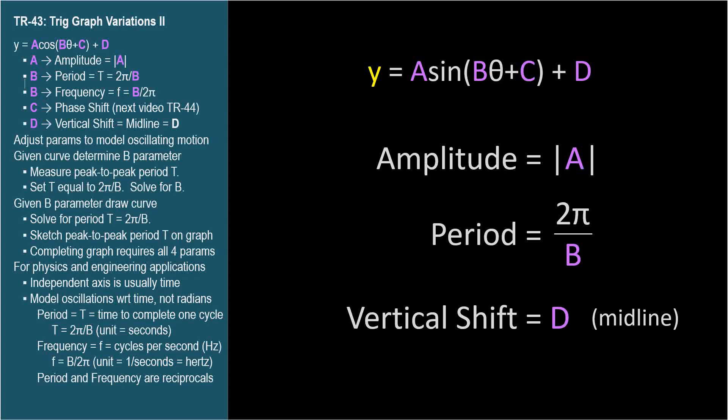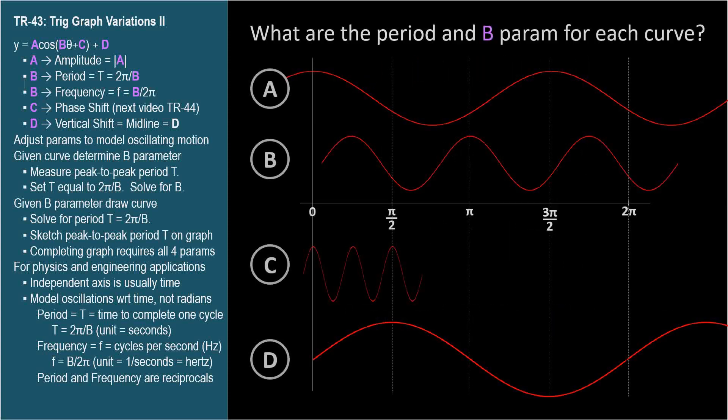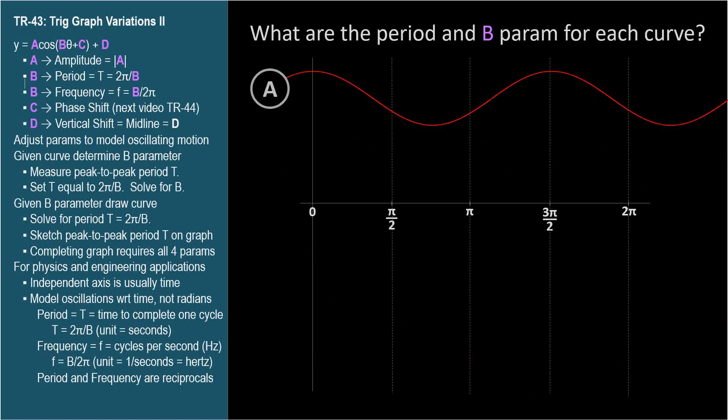Now let's determine the b parameter for various curves by inspecting their graphs. What are the period and b parameters for each curve? Starting with curve a, the distance from peak to peak is the period, which by inspection is 3 pi over 2. We're also asked to find the b parameter. And we know that period equals 2 pi over b. So set these terms equal to each other and solve for b. When the period is 3 pi over 2, the b parameter is 4 thirds.